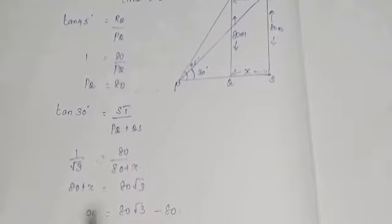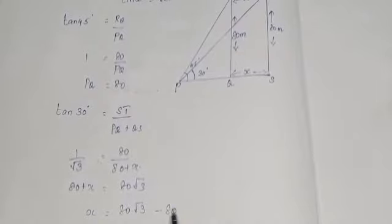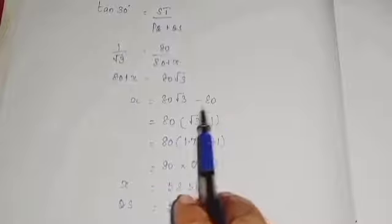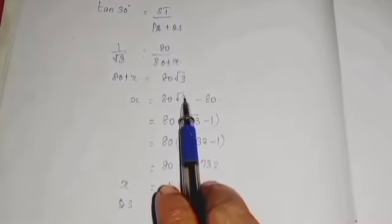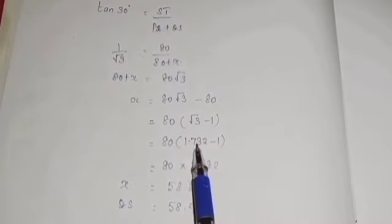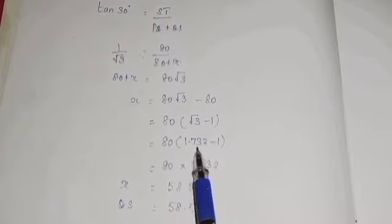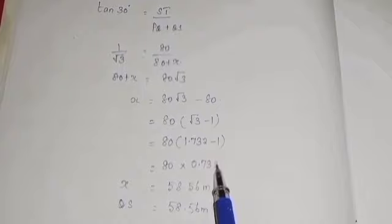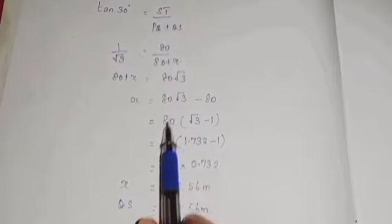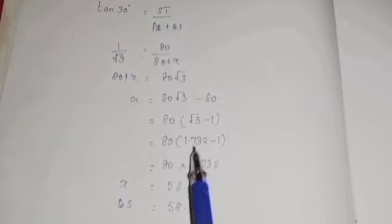Cross multiplying: 80 plus x equals 80 root 3. So x equals 80 root 3 minus 80, which is 80 times (root 3 minus 1). Calculating this: root 3 is approximately 1.732, so 1.732 minus 1 equals 0.732. Multiplying by 80 gives 58.56 meters. This is the distance the bird traveled.